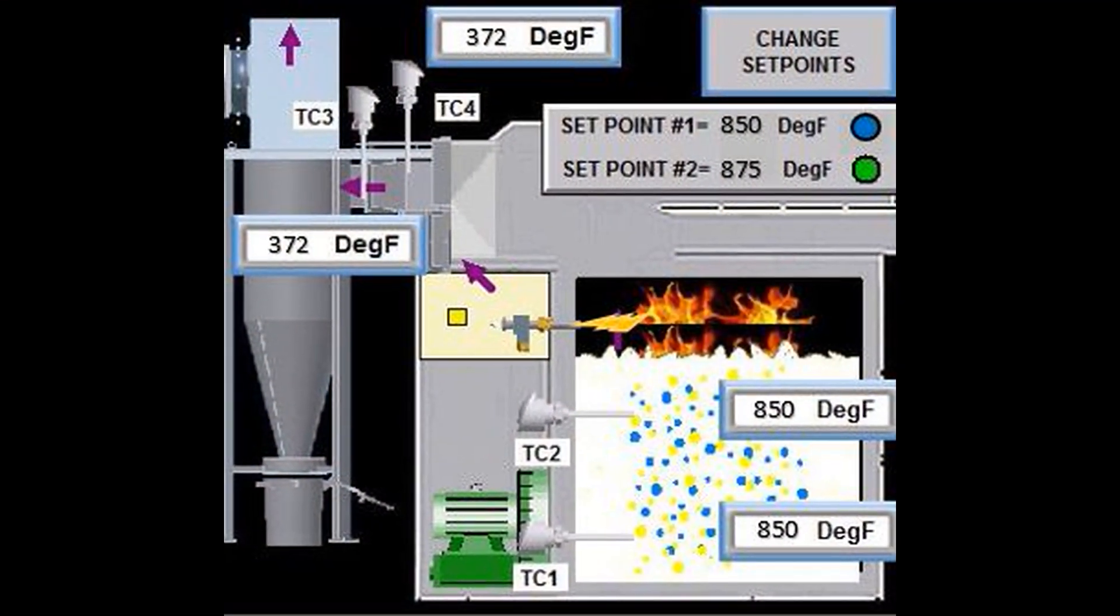The fluid clean typically operates at 850 degrees Fahrenheit but can operate at a lower or higher temperature depending on the type of metal being cleaned and the type of organic that is being removed.